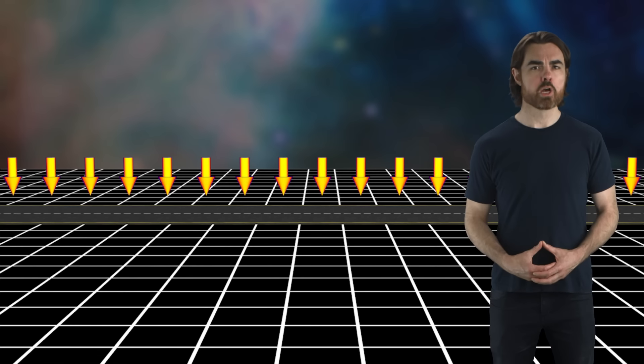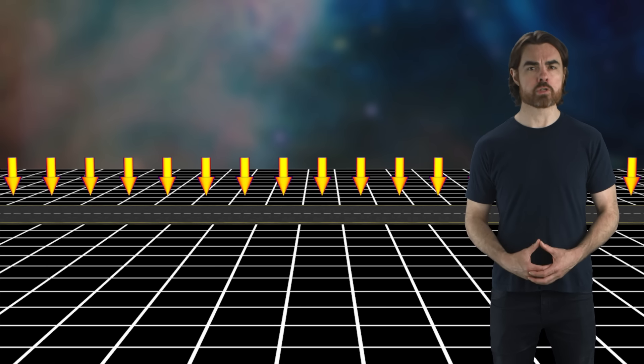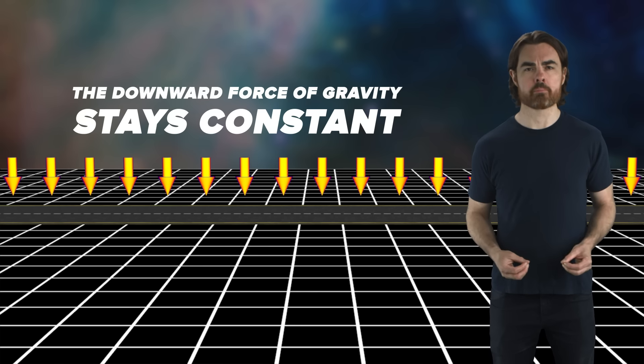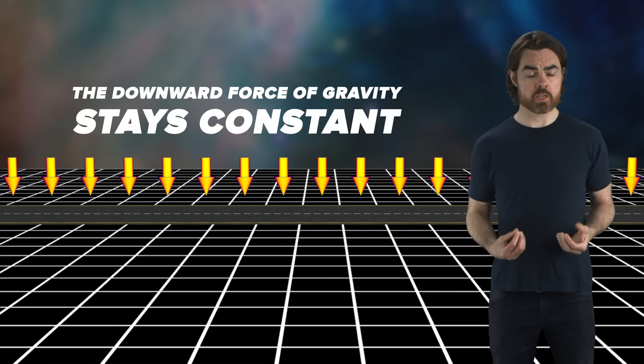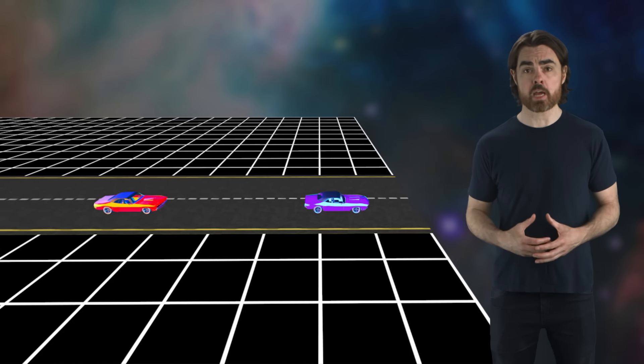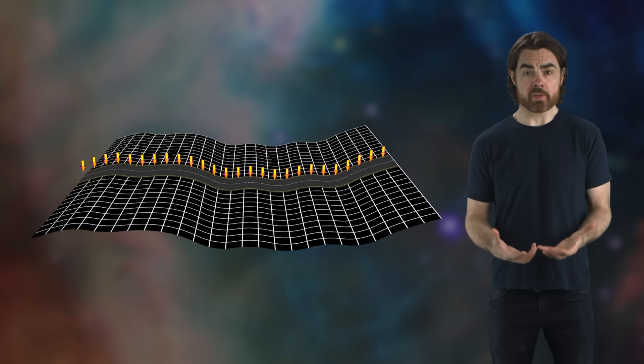For example, moving along a perfectly flat road, the downward force of gravity stays constant. We have symmetry to spatial translation. And Noether's theorem tells us there's a corresponding conserved quantity. That quantity is momentum. If two cars collide on that road, the sum of their combined momentum stays the same.